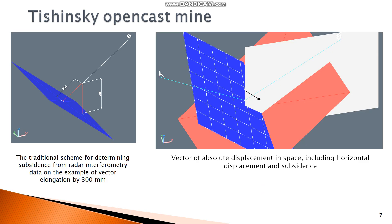As you know, to determine the spatial coordinates of a point, you need at least three vectors. In this case, we had only two. To solve the problem of determining all the absolute movements in the opencast, the third vector was defined as the normal to the opencast board.